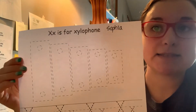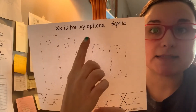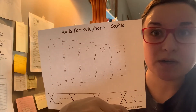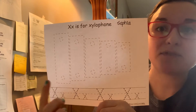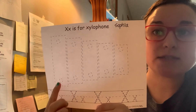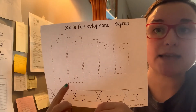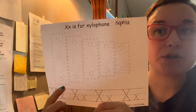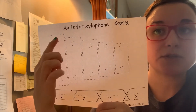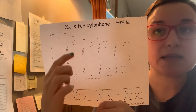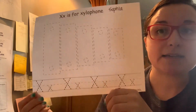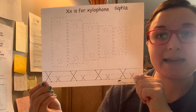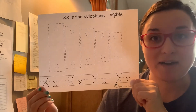Our paper today says X is for xylophone — another X word! What you're going to do today is you're going to trace all of these rectangles for the xylophone. When you're done, you have to trace the little circles in the middle, and you are going to trace your big X's and your little X's.